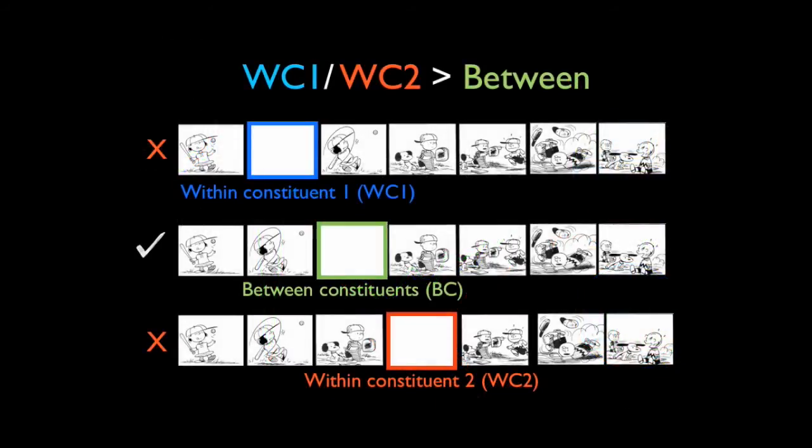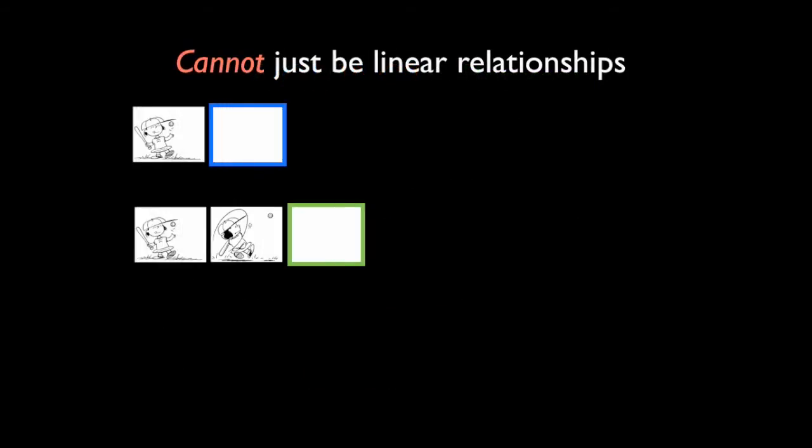First, the anterior negativity that was greater to disruptions within constituents than between constituents provides evidence that people make such groupings. Because we saw a difference between the brainwaves to disruptions in the first grouping compared to the second grouping at the disruption itself, people could not have been using linear transitions between images as a cue for the change between segments, because they hadn't made the transition to the next panel out of the grouping yet.